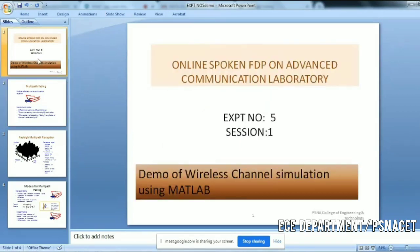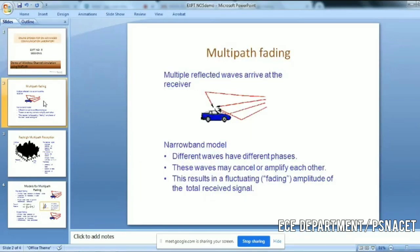The channels that we are going to discuss here are the Rayleigh and Rician channels. What is multipath fading? Multiple reflected waves arrive at the receiver. From the transmitter to the receiver, there is a possibility of many paths, multipath. So the received signal is the faded signal.